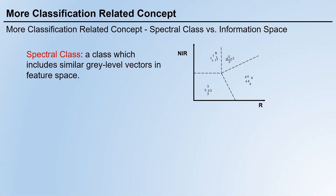You might ask: each class includes similar grayscale vectors instead of pixels — so why am I saying pixels here instead of vectors? What is the difference between a vector and a pixel? A pixel is simply the smallest unit in a remote sensing image.